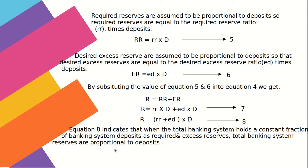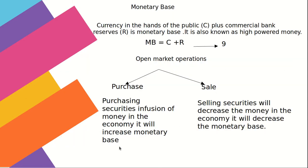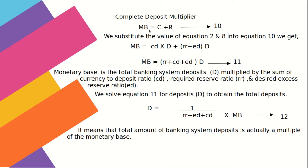Monetary base: currency in the hands of the public plus commercial bank reserves equals the monetary base, also known as high-powered money. So MB = C + R. Regarding open market operations — purchase and sale — when the central bank (Federal Reserve or RBI) wants to increase money supply, they purchase securities, injecting money into the economy and increasing the monetary base. Selling securities decreases the monetary base.